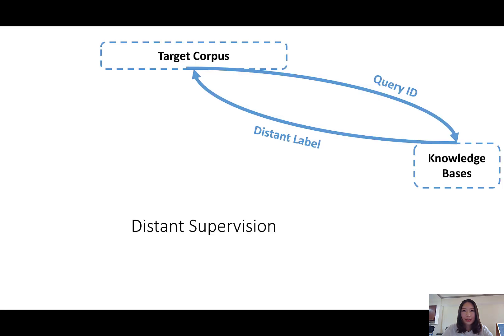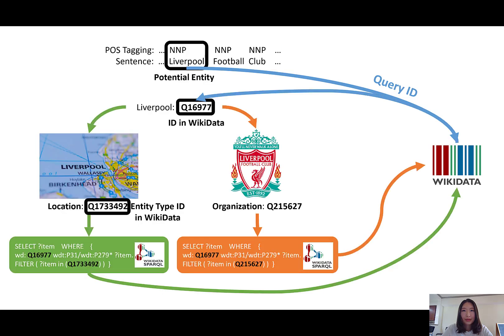To tackle the label scarcity issue, one approach is to use Distance Supervision to generate labels automatically by matching tokens in the target corpus with concepts in a knowledge base, such as Wikipedia, which is easy and cheap to access. For example, given a potential entity Liverpool, we query the knowledge base to check if Liverpool is of type location or of type organization. The distance label will be successfully assigned when a match is found.